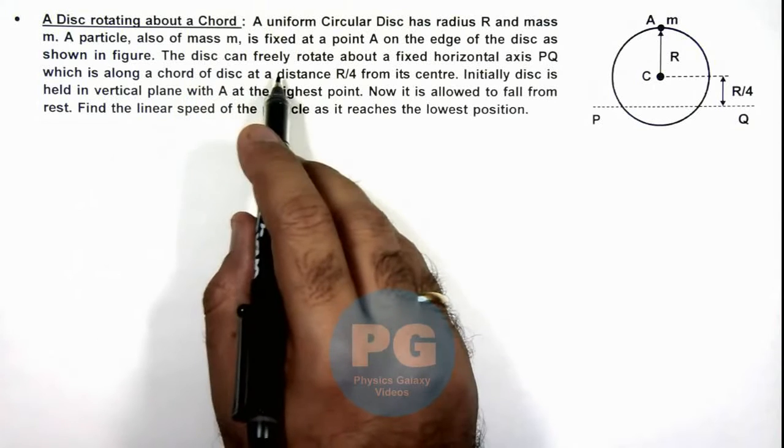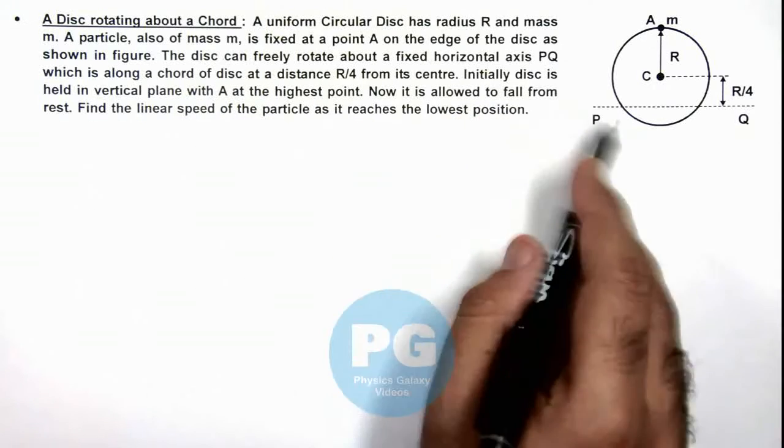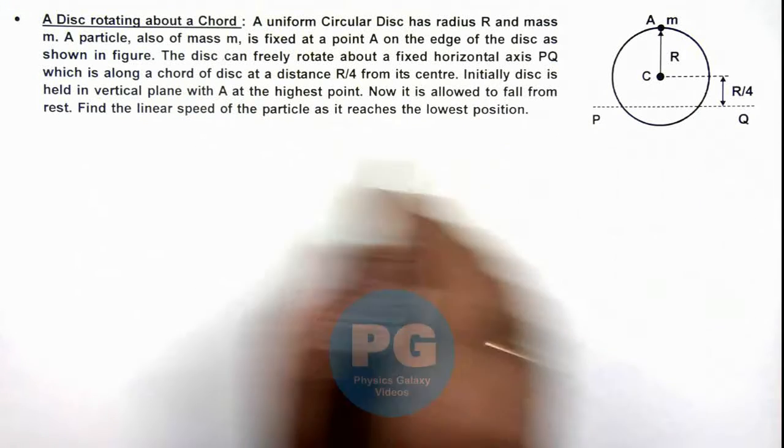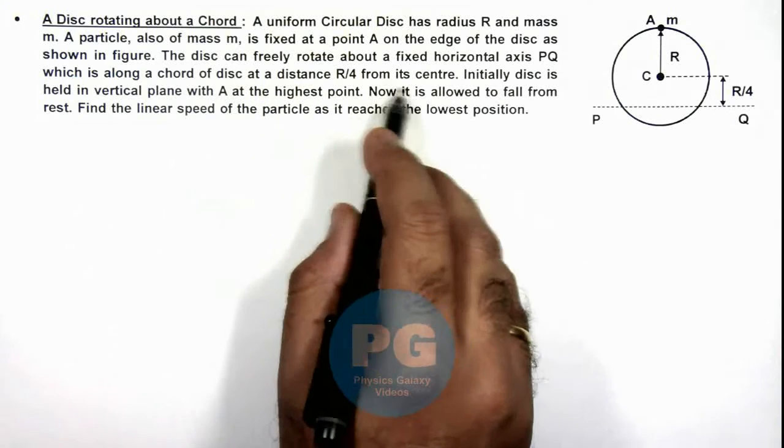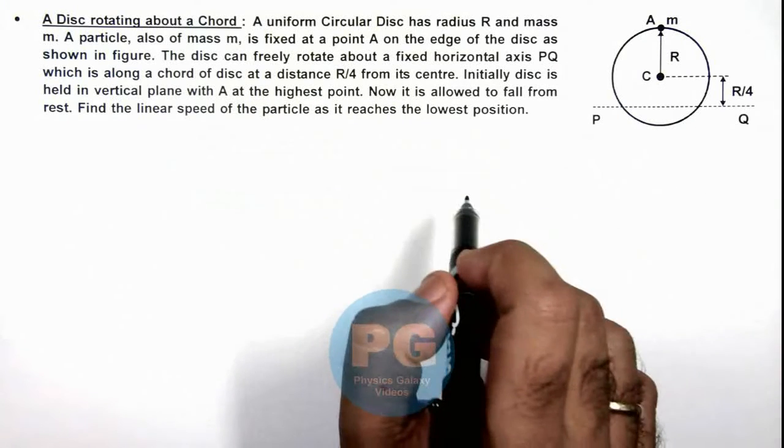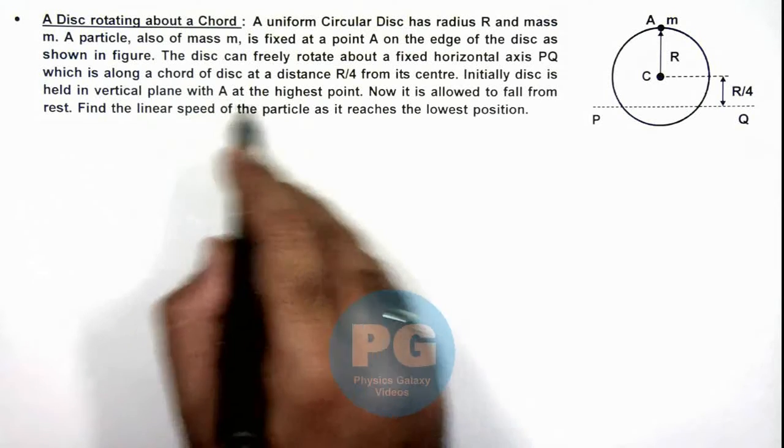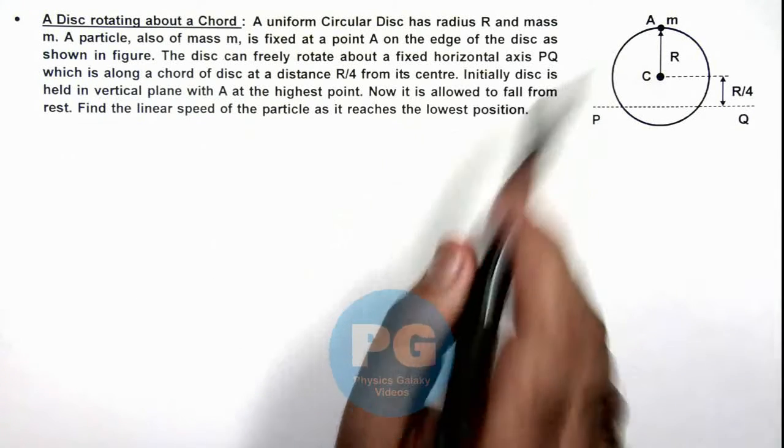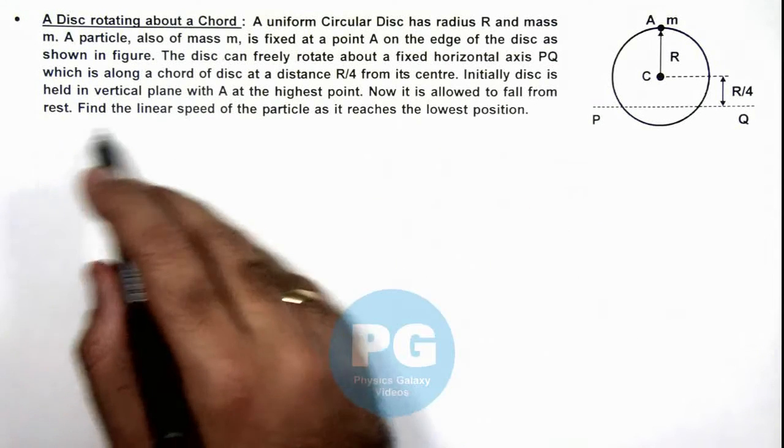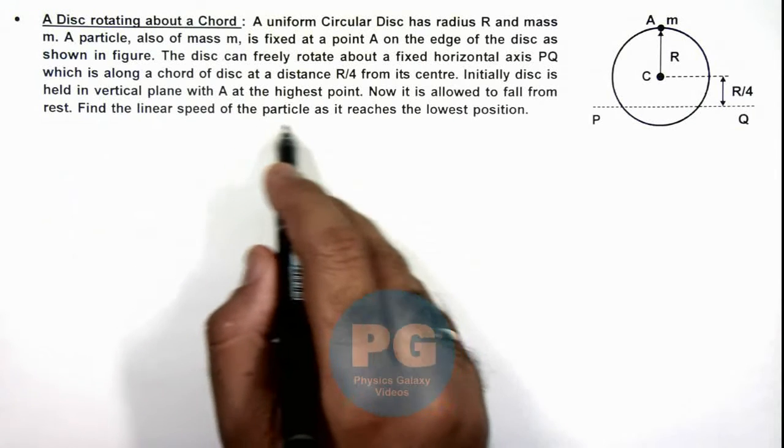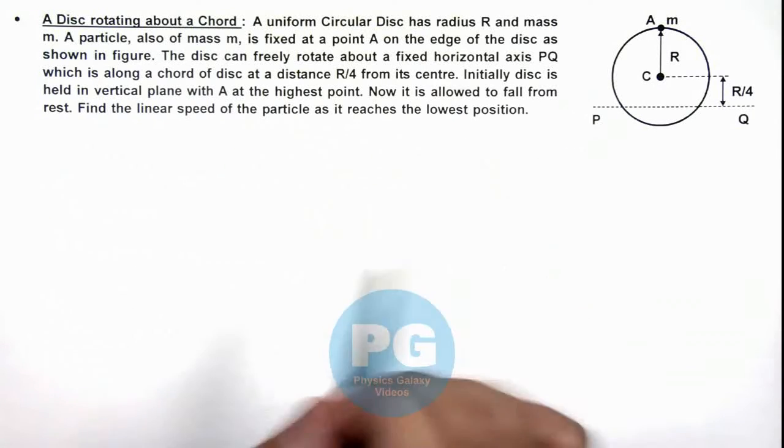The disc can freely rotate about a fixed horizontal axis PQ, which is along a chord of disc at a distance R by 4 from the center. Initially, the disc is held in vertical plane with A at the highest point, and now it is allowed to fall from rest. We are required to find the linear speed of the particle as it reaches the lowest position.